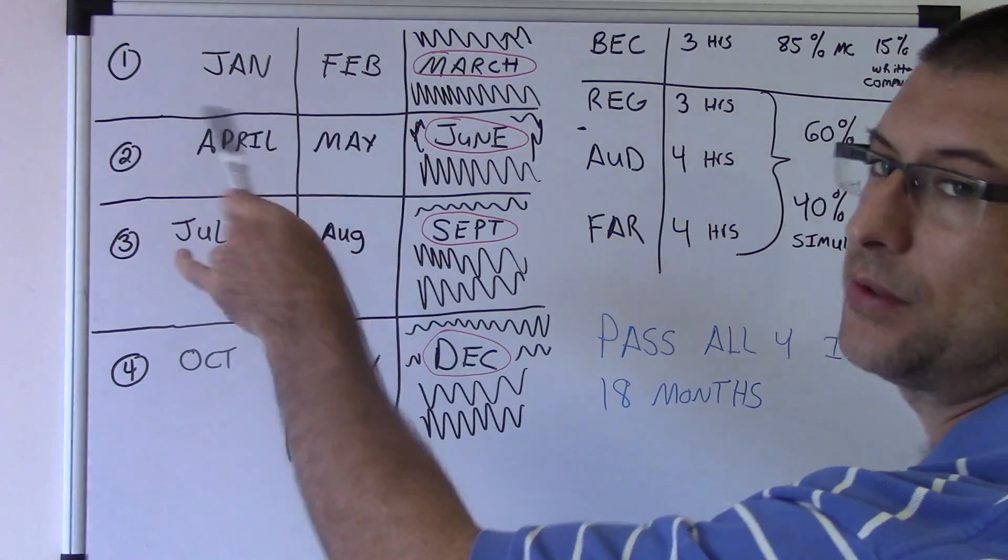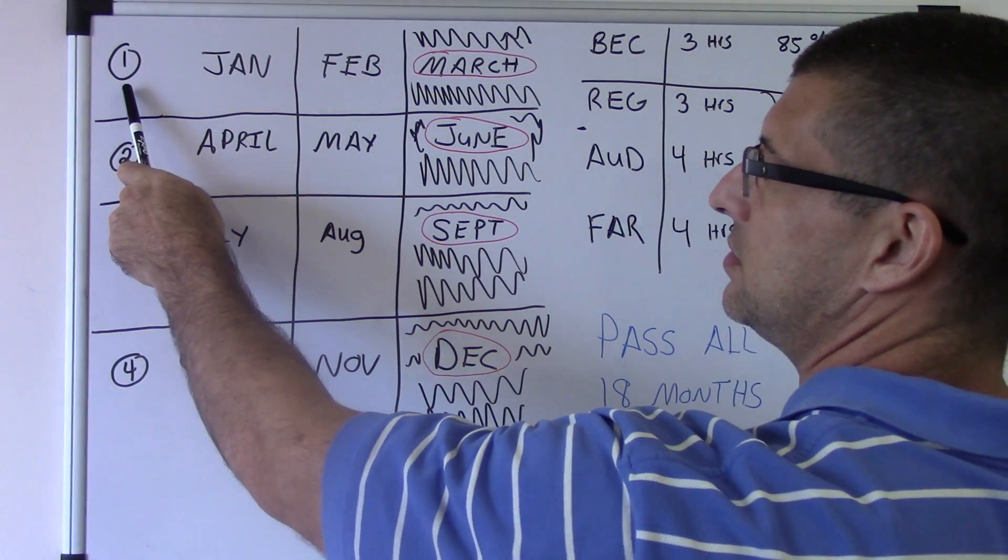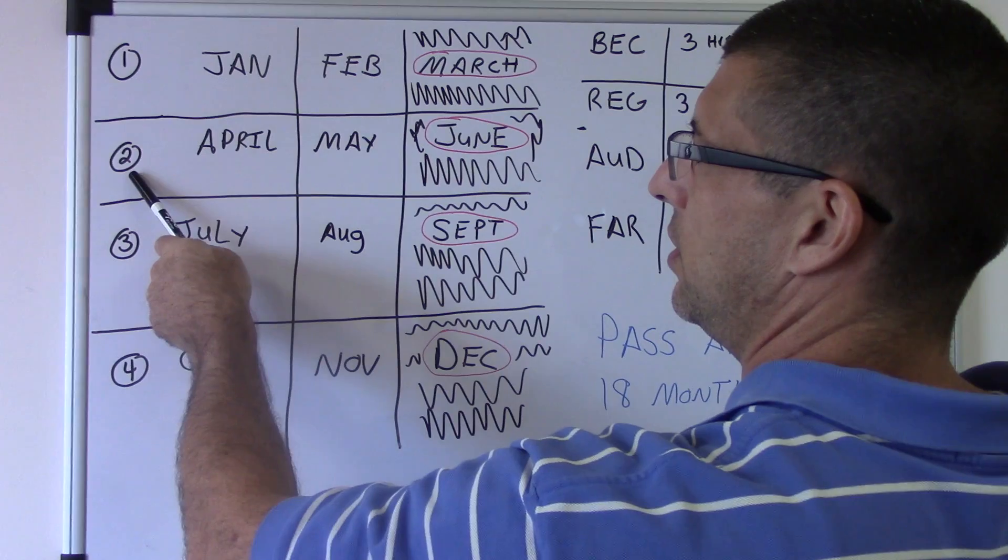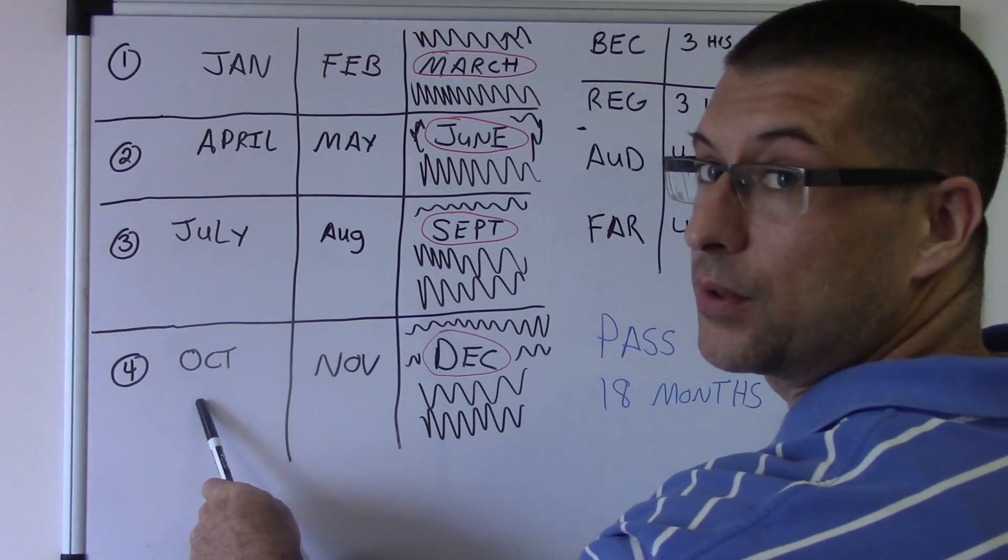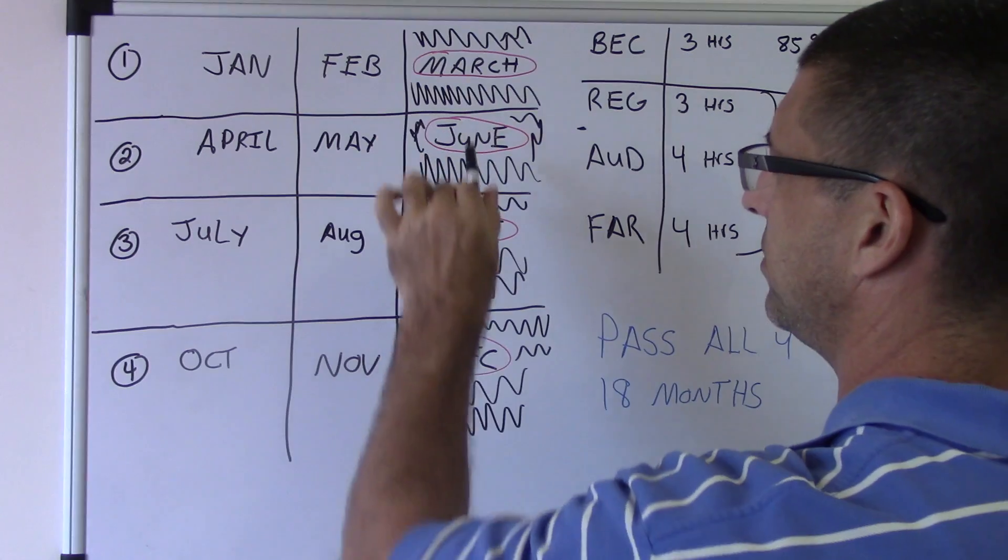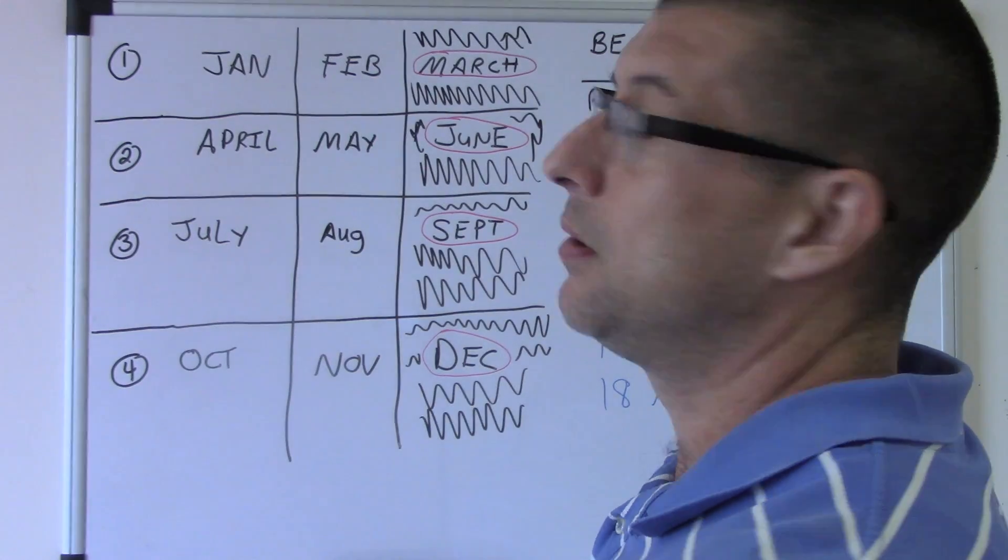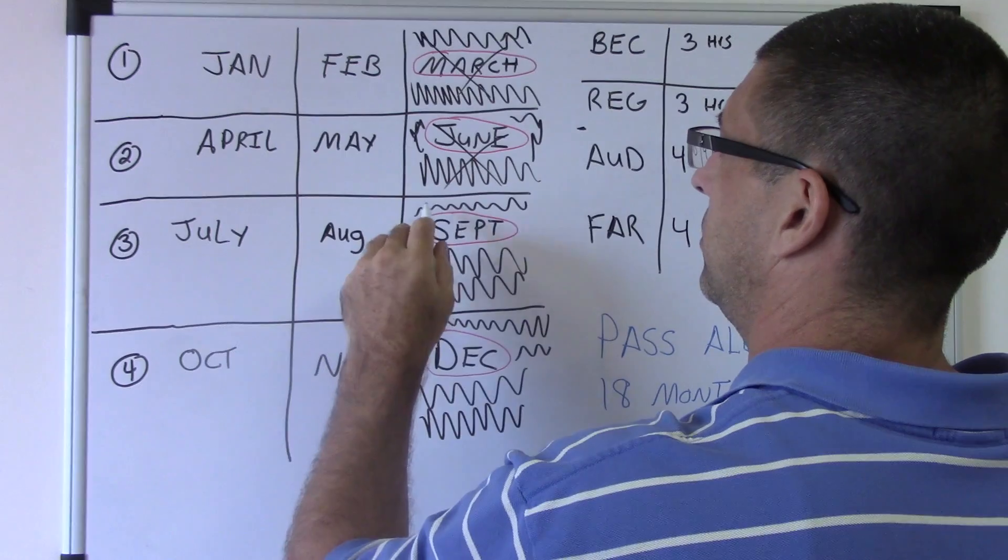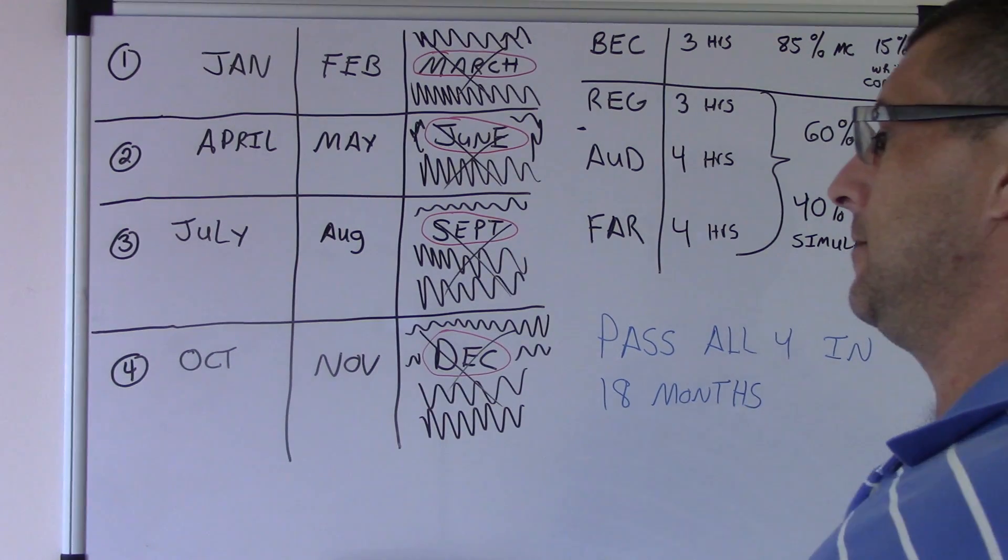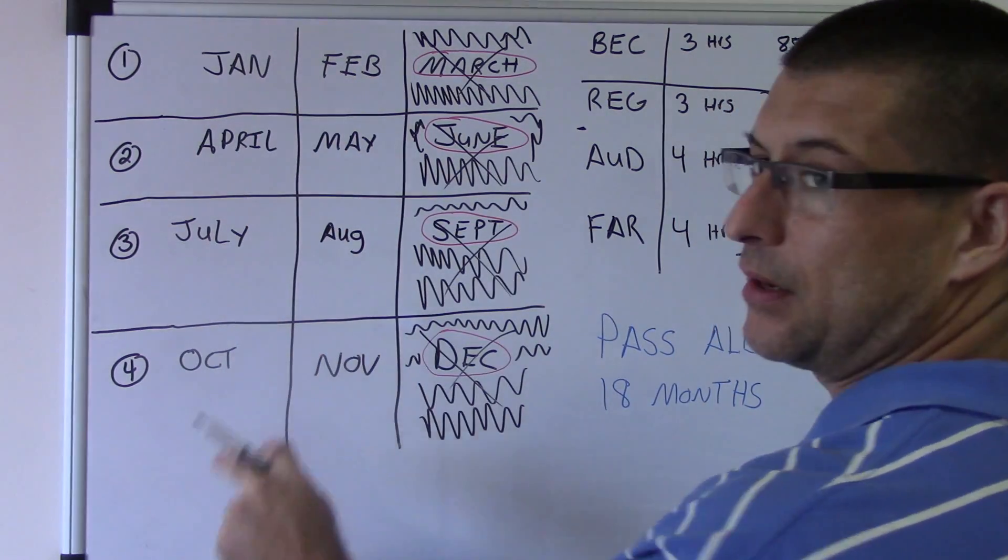Now when can you take the exam? There's four different testing windows. Testing window one is the first quarter, first three months. Second window is the second quarter, third window is third quarter, fourth window is the fourth quarter. Now the third month in every quarter is called blackout month, and you cannot take the exam that month. They don't offer those that month. So you can really only take the exams for eight months out of the year.